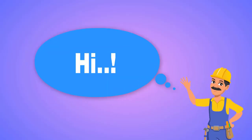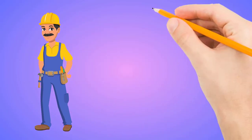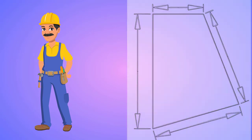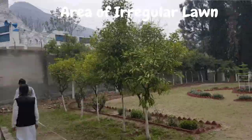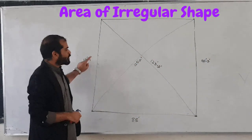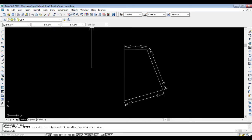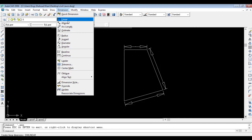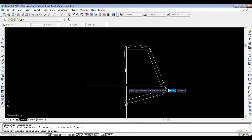Hi beautiful people, today I am going to start another interesting short video series related to the area of irregular shape. The video series is divided into three parts. In this part I will show you the procedure how to measure the area of irregular shape using measuring tape. In part two I will show you how to find out the area of the irregular shape, and in part three I will show you how to draw this irregular shape in AutoCAD, and also how to find out its area in AutoCAD.